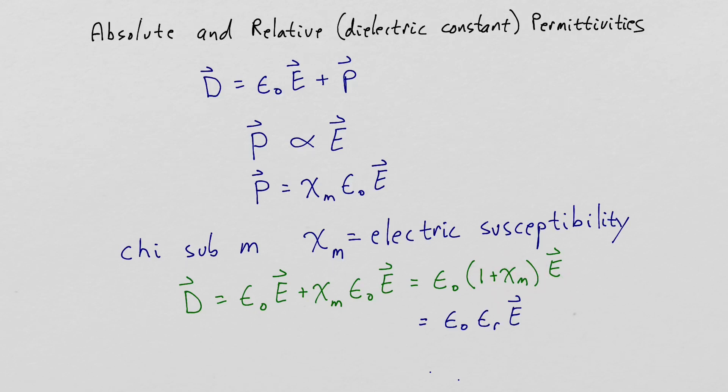We will now rewrite one plus the electric susceptibility as epsilon sub r. Epsilon sub r is the relative permittivity. It's also referred to as the dielectric constant.